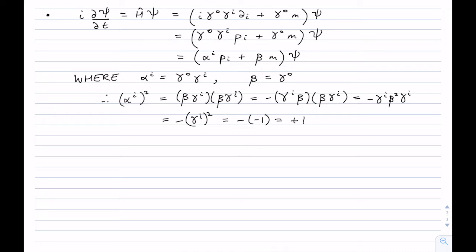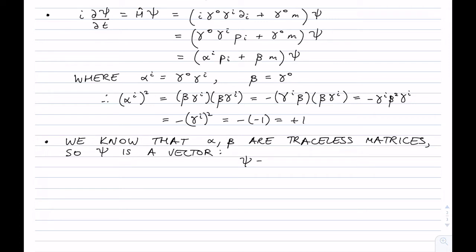This Dirac equation implies that the wave function psi is a vector — similar to the two-component vector in the Klein-Gordon two-component formalism. We know psi is a vector of dimension n, and alpha and beta are n×n matrices.